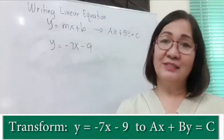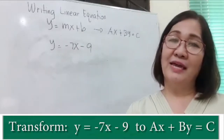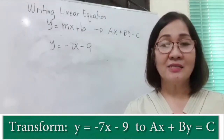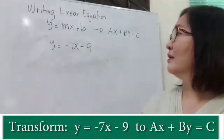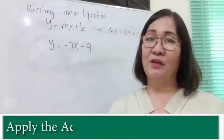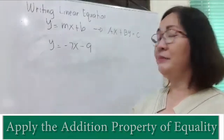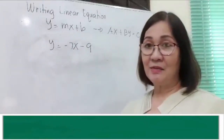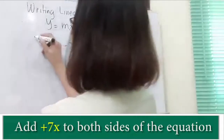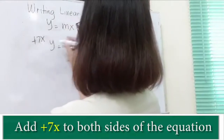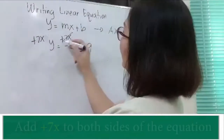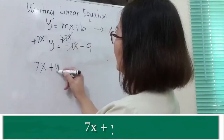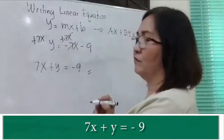Another example: transform y is equal to negative 7x minus 9 to the standard form ax plus by is equal to c. By addition property of equality, we add positive 7x to both sides to eliminate negative 7x from the right side. Your answer is 7x plus y is equal to negative 9.